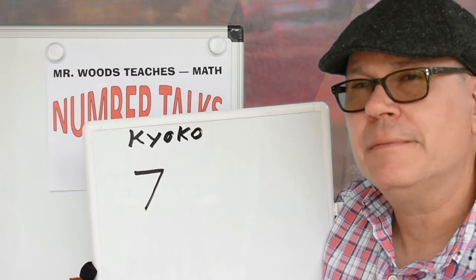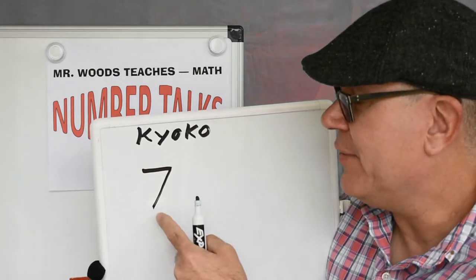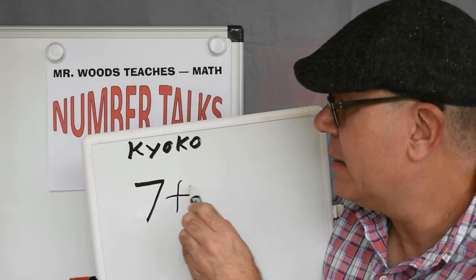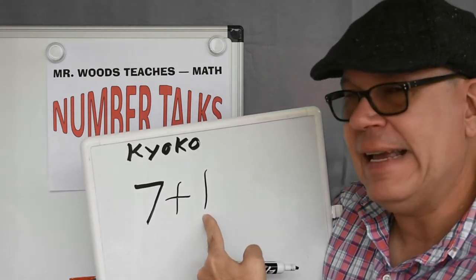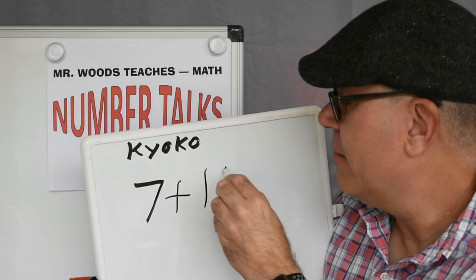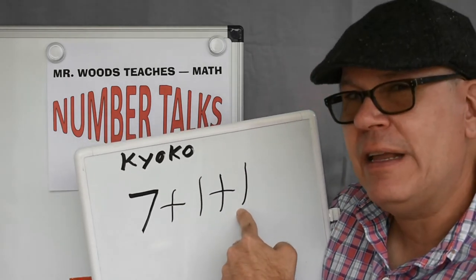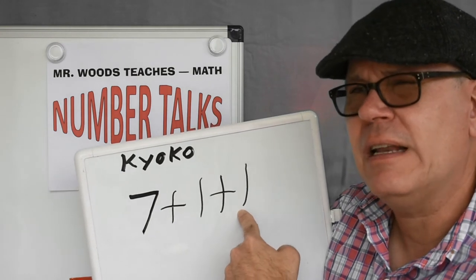Do you know how to count on? So if I have seven, what's the next number if I add one more year? It's going to be eight, plus one more year, nine.